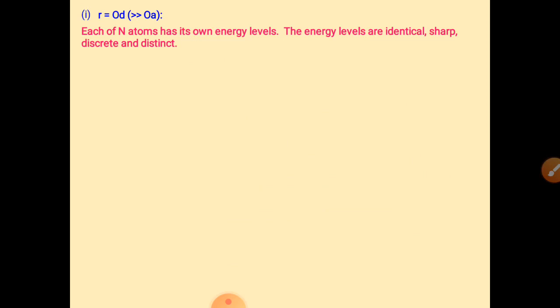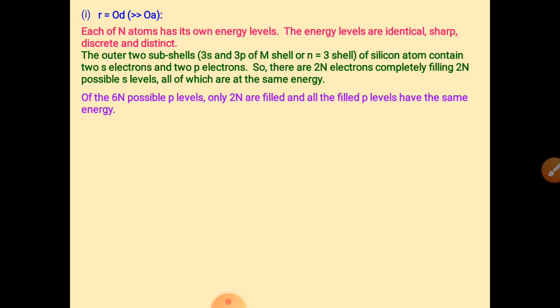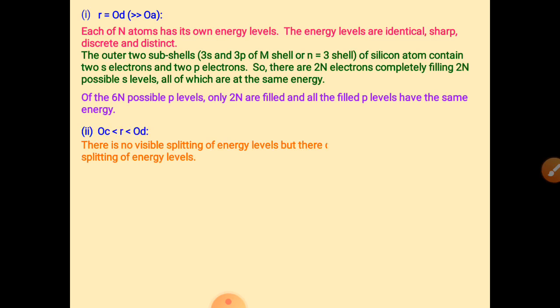Each of the n atoms has its own energy levels — identical, sharp, discrete, and distinct. For example, the 3s and 3p shells (n=3) each contain 2n electrons. The 3s energy levels are completely filled by 2n electrons. For the p energy level, the capacity is 6n electrons, but we only have 2n electrons. So there is no visible splitting yet, but there develops a tendency for splitting of energy levels.